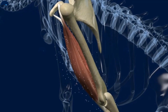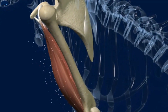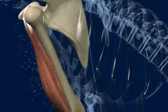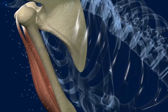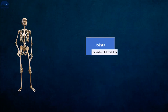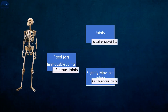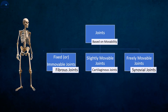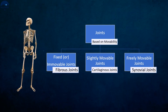On the basis of freedom of movement allowed by joints, we can classify joints into three types. They are immovable or fixed joints, slightly movable joints, and freely movable joints.